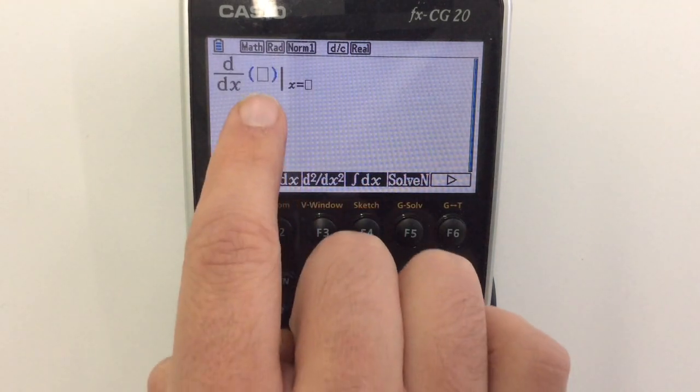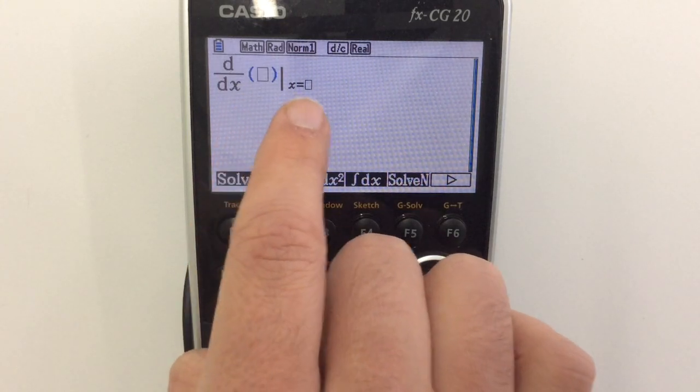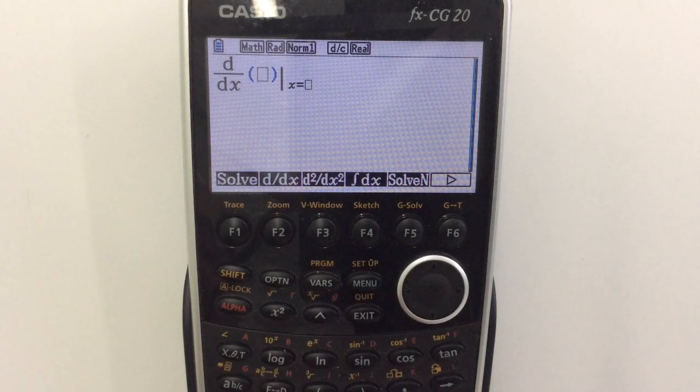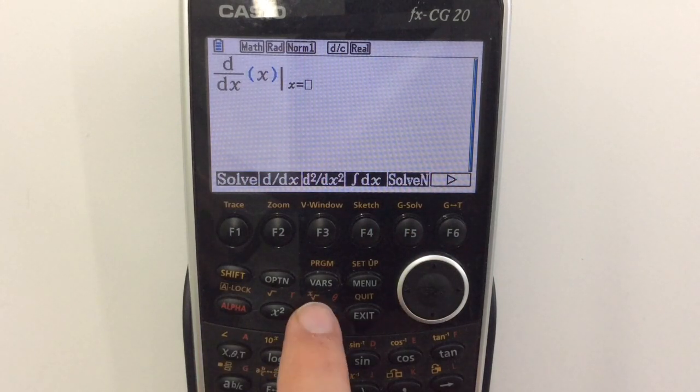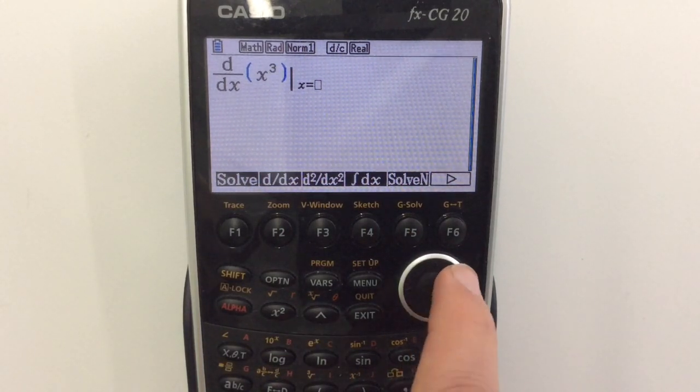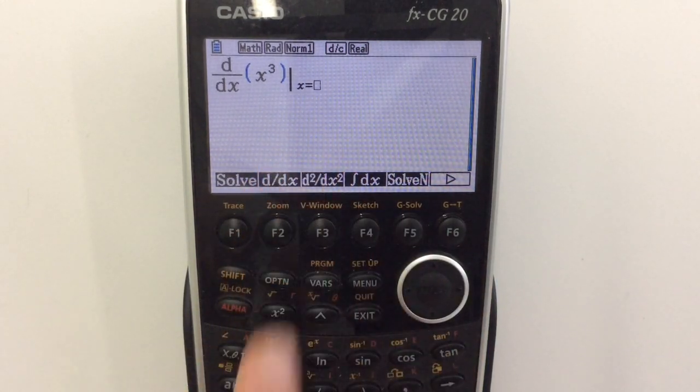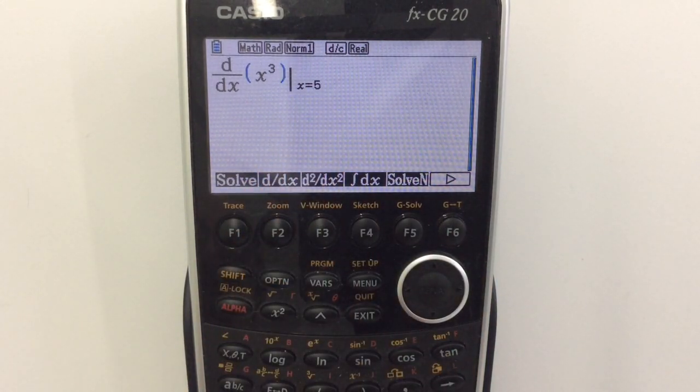If I press differentiate, here is where we're going to be writing our expression. Here is where we're going to write the value that we are evaluating. So let's do something nice and simple like x to the power of 3. Press right and right again and it will move us over to this section here. So we're going to evaluate x cubed when differentiated at x equals 5. Pressing enter or execute and we get our answer of 75.